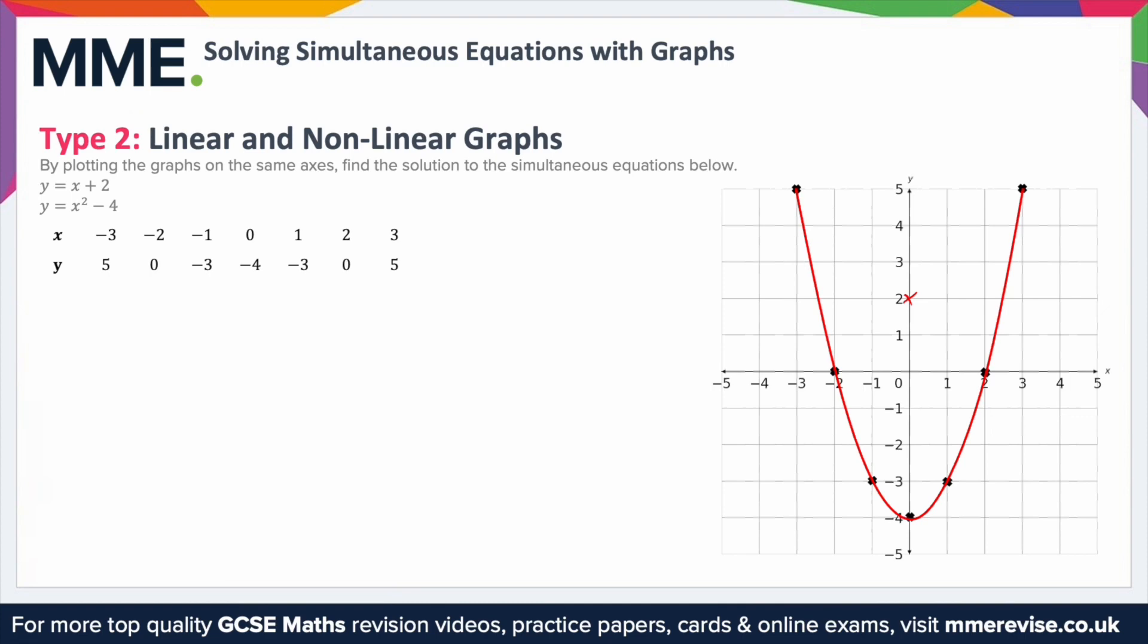Ideally, as far away as possible from the point you've already plotted, just so it's more accurate. I'm going to pick the point where x is minus 5. So we're doing minus 5 plus 2. Minus 5 plus 2 is minus 3. So let's plot the point minus 5 minus 3. So that's there.